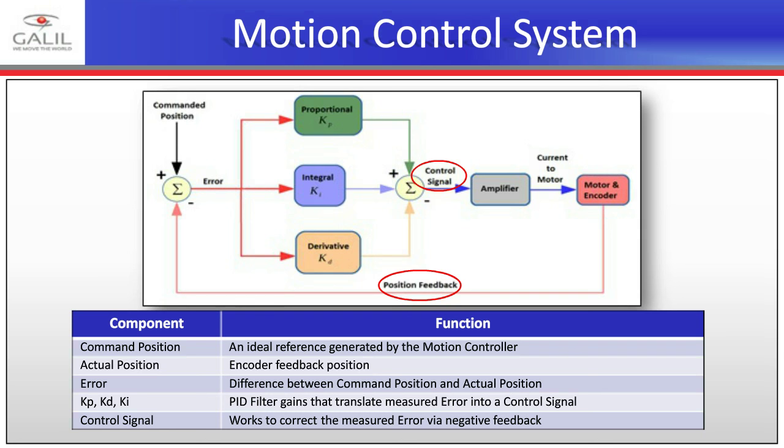Benefits of this analog control scheme: it's an established technology with decades of work behind it, very well understood in the industry. Low cost due to a variety of sizes, ratings, and vendors — there's quite a competitive market. And extremely low latency: the signals produced by the controller and encoder are essentially seen instantly. As soon as the motion controller puts out that 10-volt signal, the amplifier sees it on the wire as fast as the electrons can move, which is pretty fast.